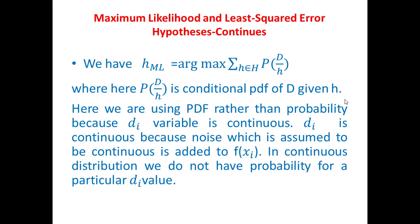The idea of invoking the probability density function is that earlier d could be assumed as discrete values, but here di's are expected to be continuous, because di = f(xi) + ei. Though f(xi) may be discrete, since ei is added and ei is continuous, the target values we get are expected to be continuous. In a continuous distribution, we cannot assign probability to an individual value — the probability for a particular value is invariably taken as zero.